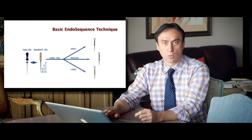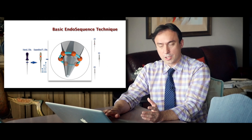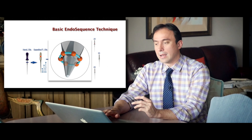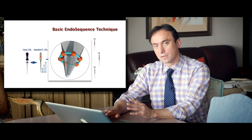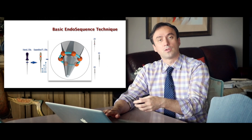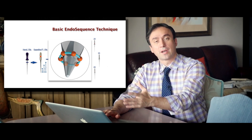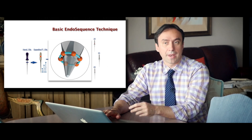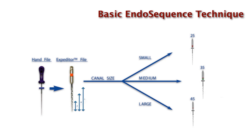The challenge was: how do you eliminate three files from a four-file pack and still have a tip that guides, so your master file doesn't ledge the canal or get over-torqued immediately after the expediter? Fortunately, right around that time, a new booster tip technology was being developed. We decided to implement the booster tip as a feature on the finishing files — sizes 25, 35, and 45. The booster tip allows the file tip to act as a guiding file, helping eliminate the additional three files while still guiding the master file safely down to full working length.